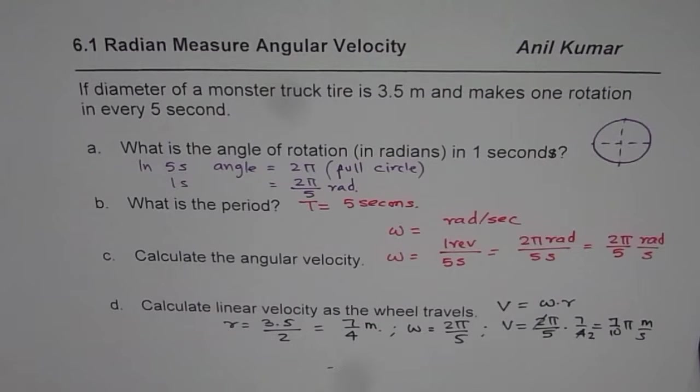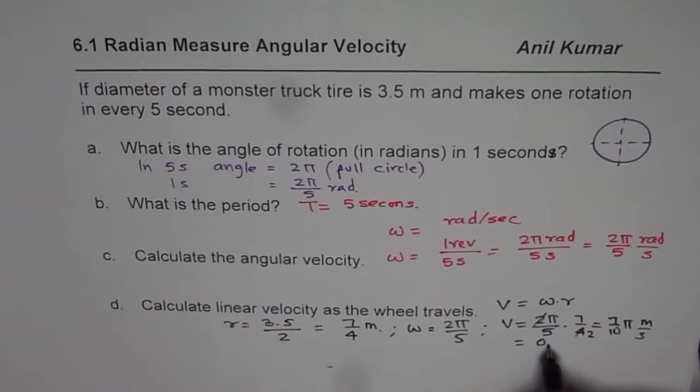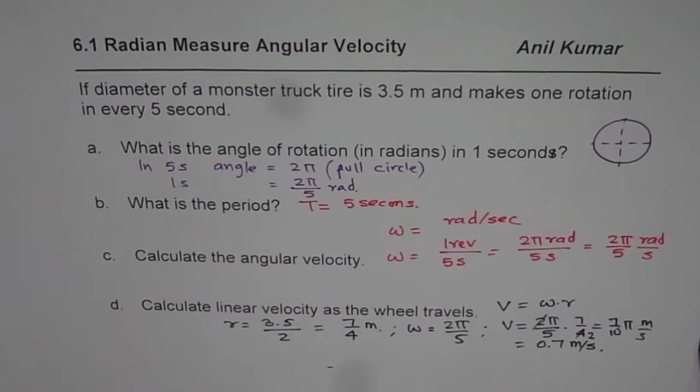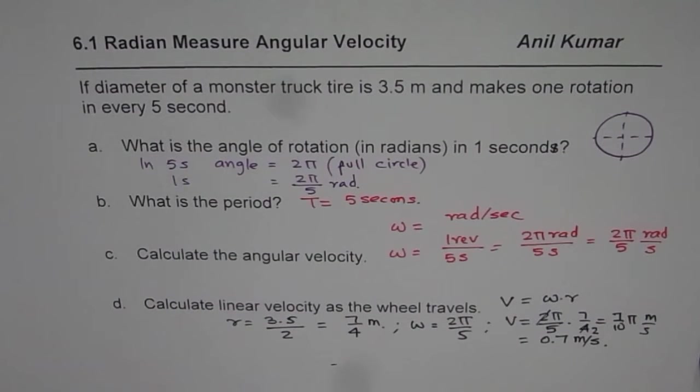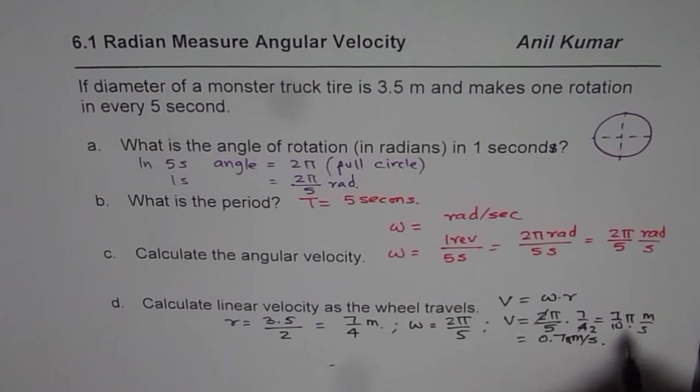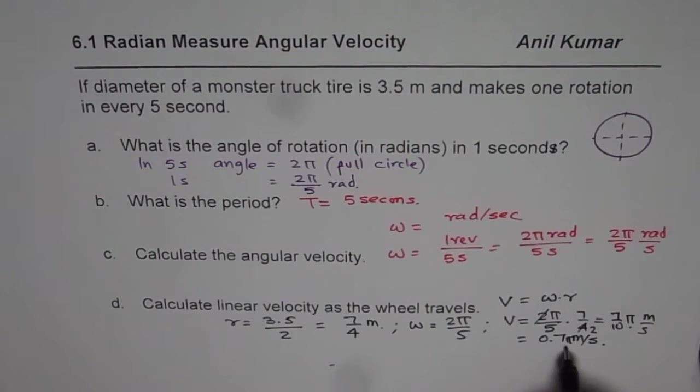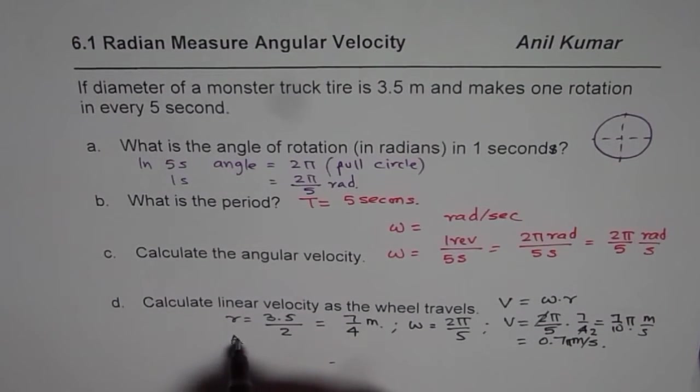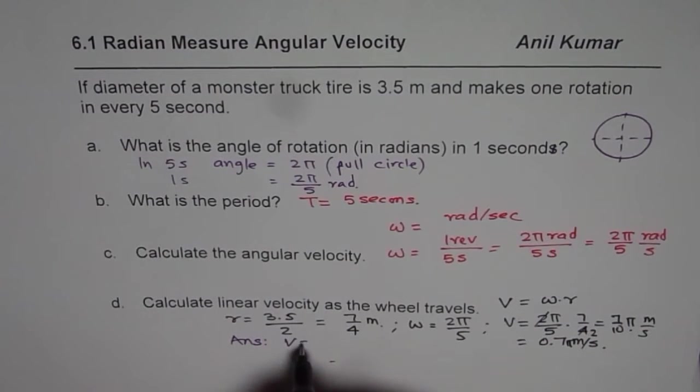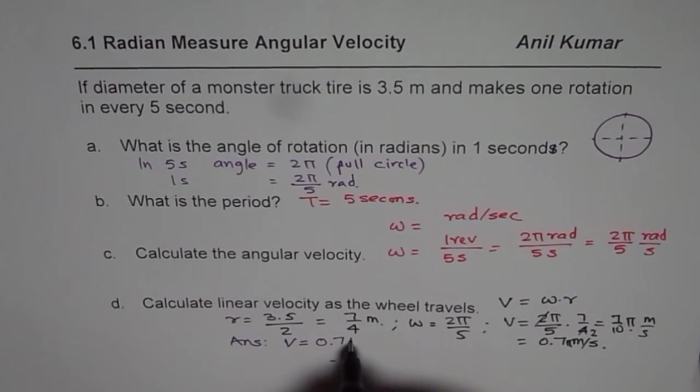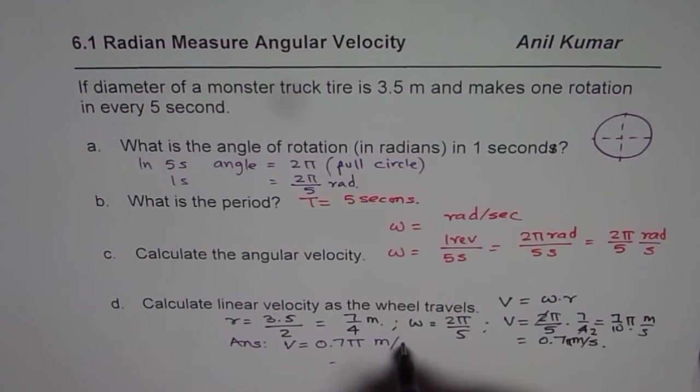That becomes the velocity for the wheel. In decimals, you can write approximately, this is actually the exact value, zero point seven pi meters per second. So that is how, zero point seven pi meters, I missed that pi here, this is pi, zero point seven pi meters per second. So velocity equals to zero point seven pi meters per second.